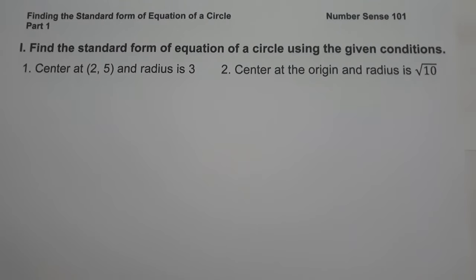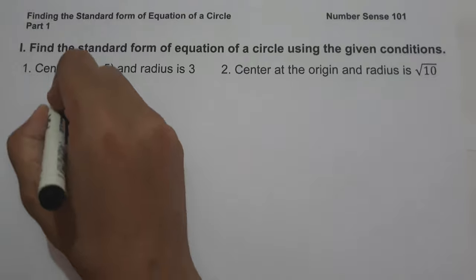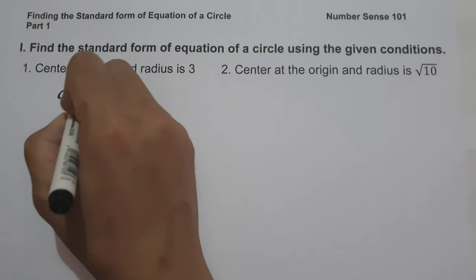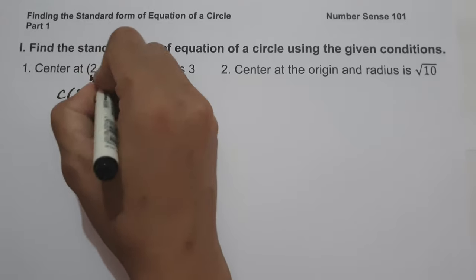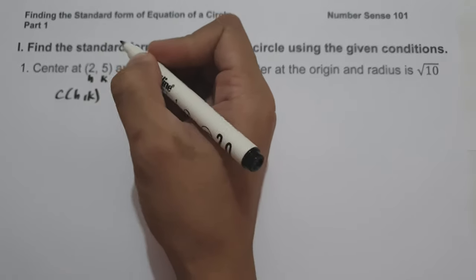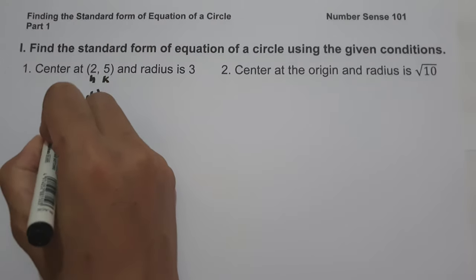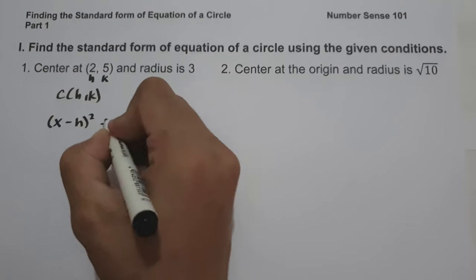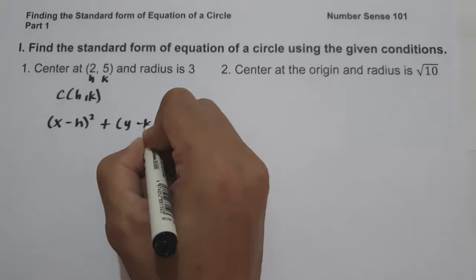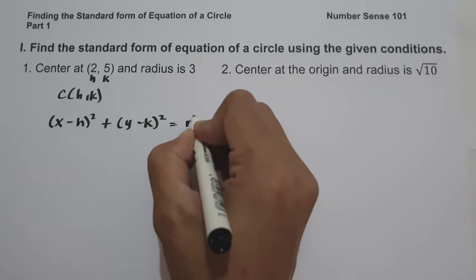Let's start with example number one. We have center at (2, 5) and radius is 3. Since the center of a circle is (h, k), the value of h is 2 and the value of k is 5. The standard form of equation of a circle is: quantity (x minus h) squared plus quantity (y minus k) squared equals r squared.